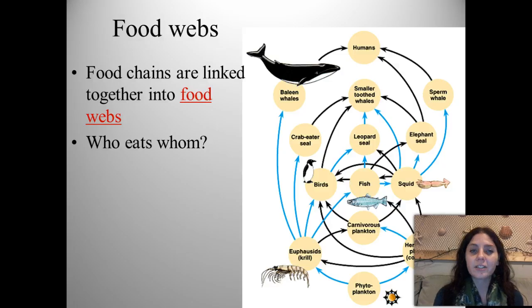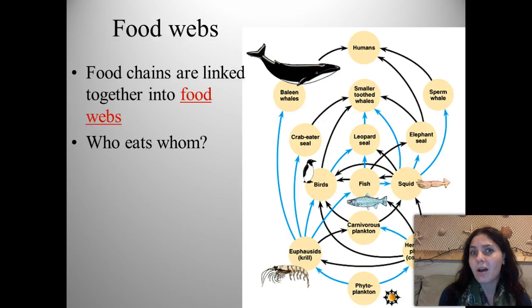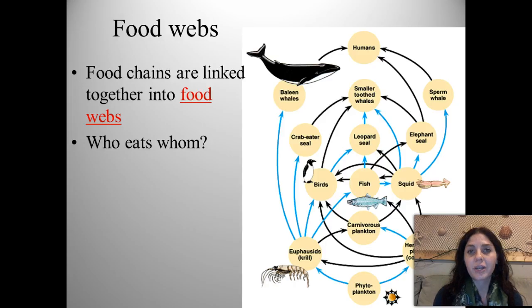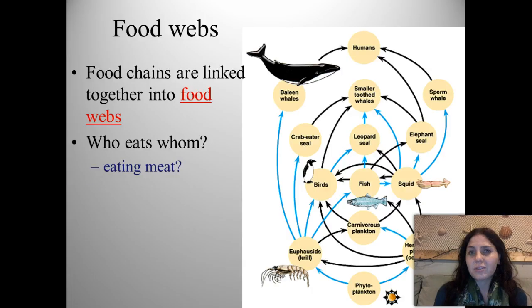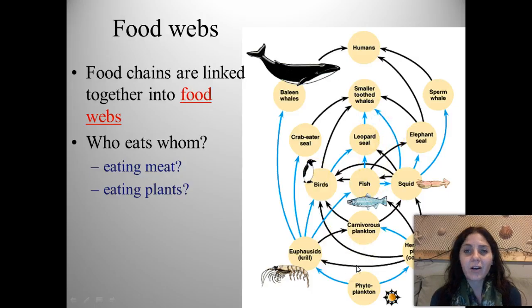Food chains are linked together into food webs, because we don't typically eat just one thing. Humans don't just eat a cow every single day — we have multiple things that we eat, and so do many other animals. So who eats whom? Who's eating meat, and who's eating plants? If you look at this diagram, you can pick out many, many food chains within this food web.